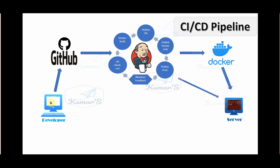This is the CI/CD flow we are going to see in this video session. In this flow, whenever a developer checks in code into a GitHub repository, the Jenkins build gets triggered. Jenkins clones the code, makes the Docker image, builds it, and deploys the image to a QA server — in this case, the same machine where Jenkins is running. If successful, it publishes the image to Docker Hub.